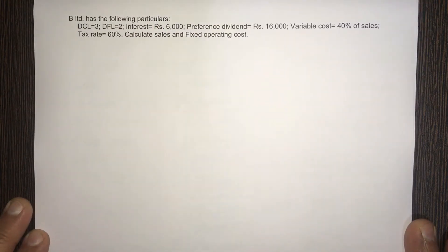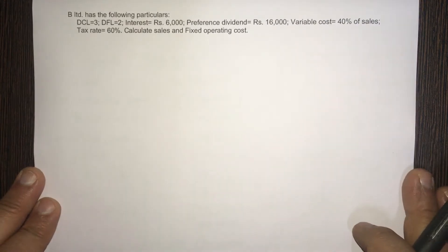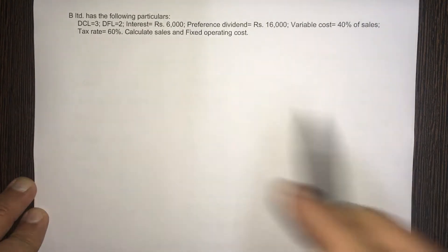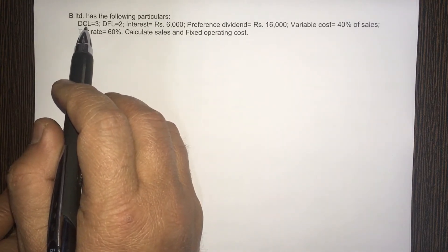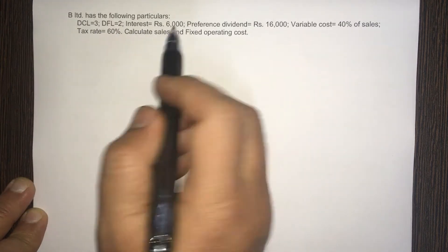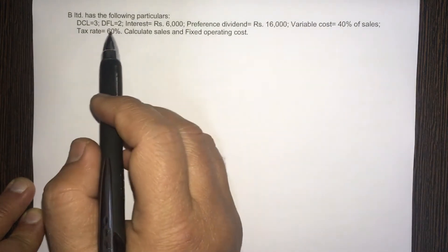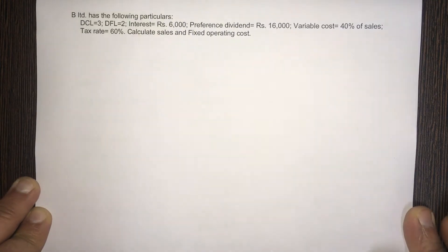Welcome back. Another leverage problem, very similar to the previous problem where we have to calculate sales and the fixed operating costs from the given information. DCL, degree of combined leverage, is 3. DFL is 2. Interest is given, preference dividend is also given. Variable cost is 40% of sales, tax rate is 60%. Calculate sales and fixed operating costs.